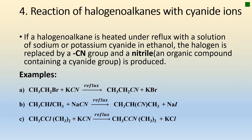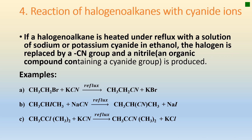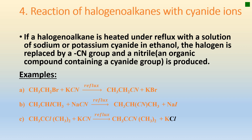The fourth reaction of haloalkanes is the reaction of haloalkanes with cyanide ions. If a haloalkane is heated under reflux with a solution of sodium or potassium cyanide in ethanol, the halogen is replaced by a cyanide group and a nitrile molecule is produced. A nitrile is an organic compound containing a cyanide group. Here we have examples: bromoethane reacting with potassium cyanide to give a nitrile; iodopropane reacting with sodium cyanide to give a nitrile; and chloromethylpropane reacting with potassium cyanide to give a nitrile molecule.